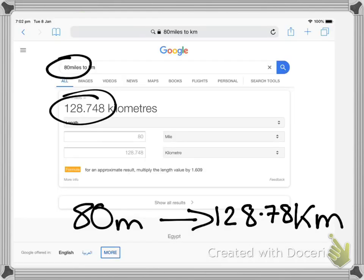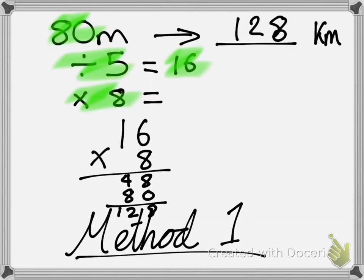My answer is 128 by doing it method 1. If I take a look at the actual answer, I'm only 0.78 away from the actual answer. I've got really quite an accurate answer there. Now let's take a look at method 2.